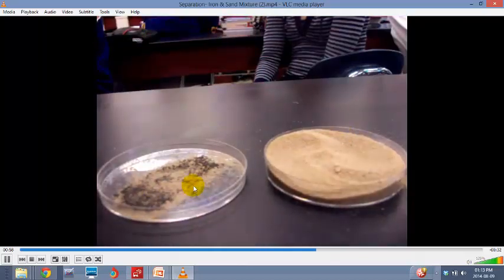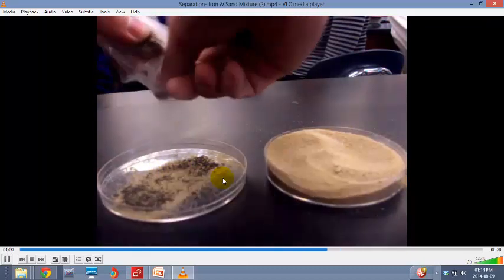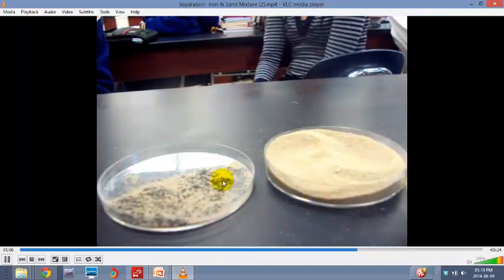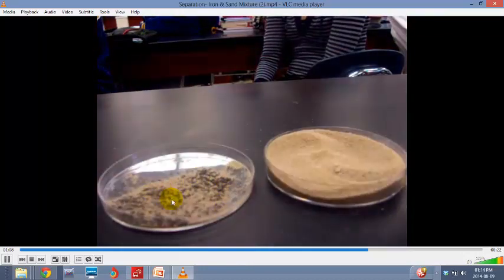Obviously you can see that there's still lots and lots of sand mixed with the iron filings. But what we could do is maybe do it again. So we could, for example, put the magnet again over this mixture and separate it out even further.